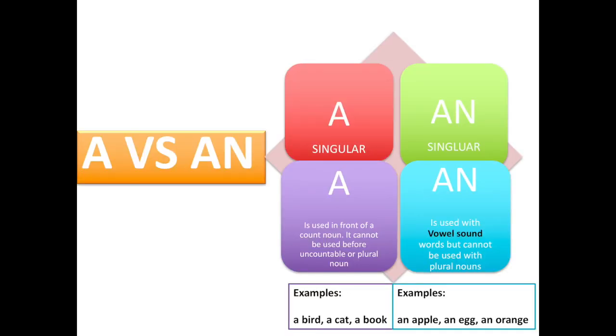We have a and an. Both a and an are singular. However, a you use in front of a count noun and it cannot be used before uncountable or plural nouns. For example, you can say a bird, a cat, a book, meaning one bird, one cat, one book. You cannot use a if it's a plural noun, so you cannot say a birds or a cats or a books.